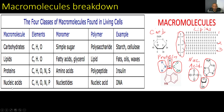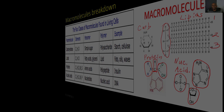And then moving on to nucleic acids: they're made of carbon, hydrogen, oxygen, nitrogen, and phosphorus. The monomers are nucleotides, and the polymer is a nucleic acid. The examples are DNA and RNA. Here's the nucleic acid structure — the phosphate group, the five-carbon sugar, and the nitrogenous base.